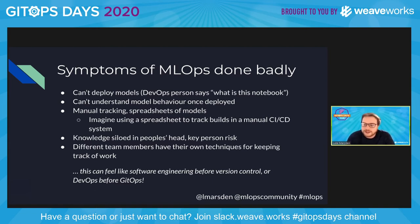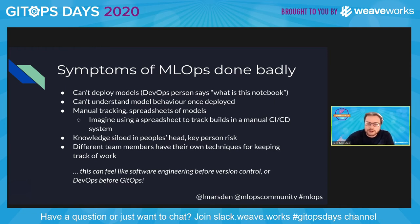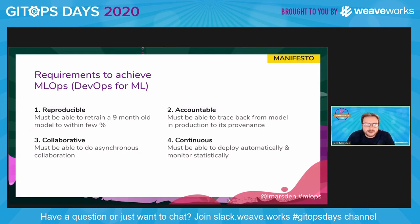All of this feels a lot like software engineering before version control — manually integrating changes and emailing patch files around. It also feels like DevOps before GitOps, where people would manually deploy software, without that audit trail and history of what was deployed when and by whom.